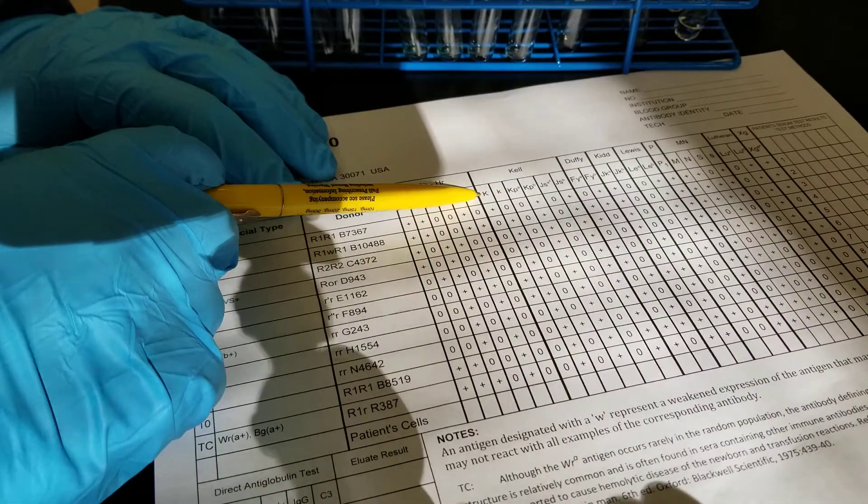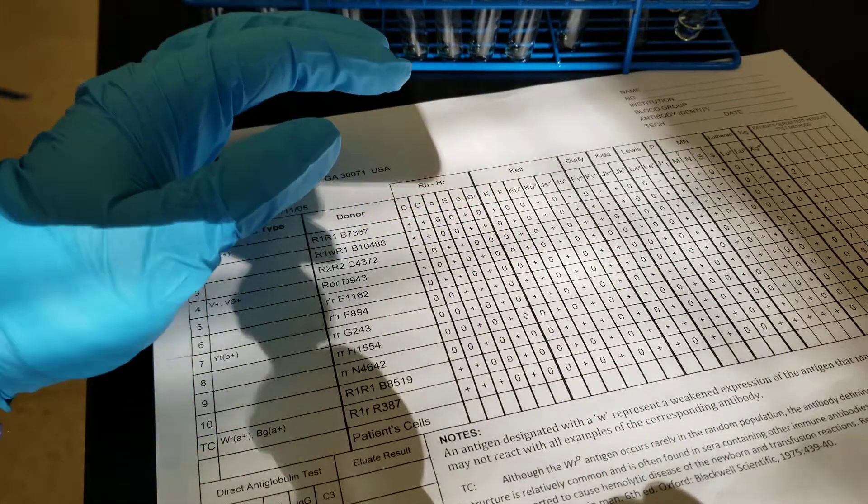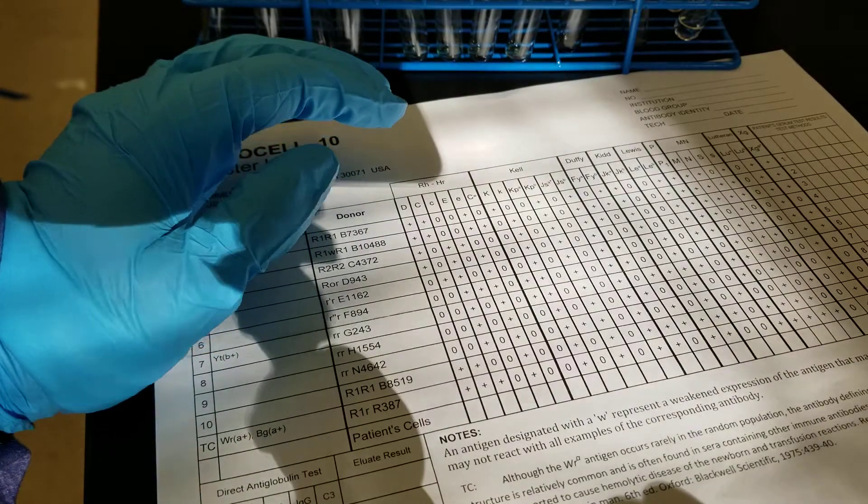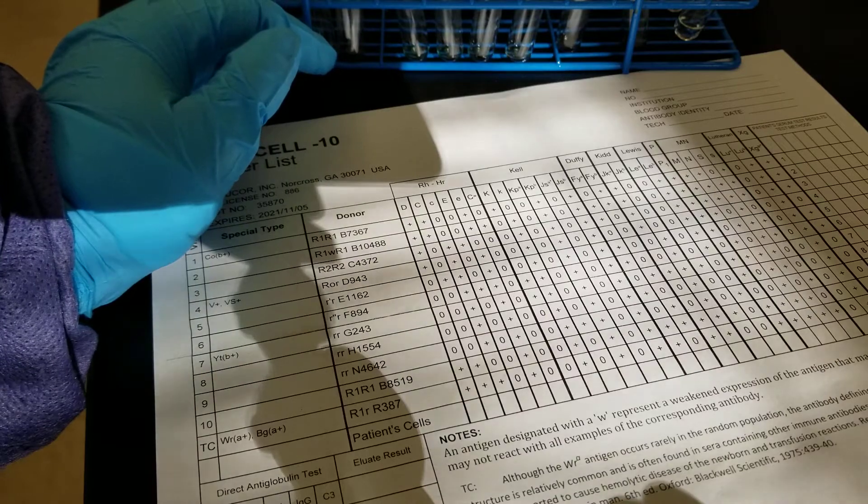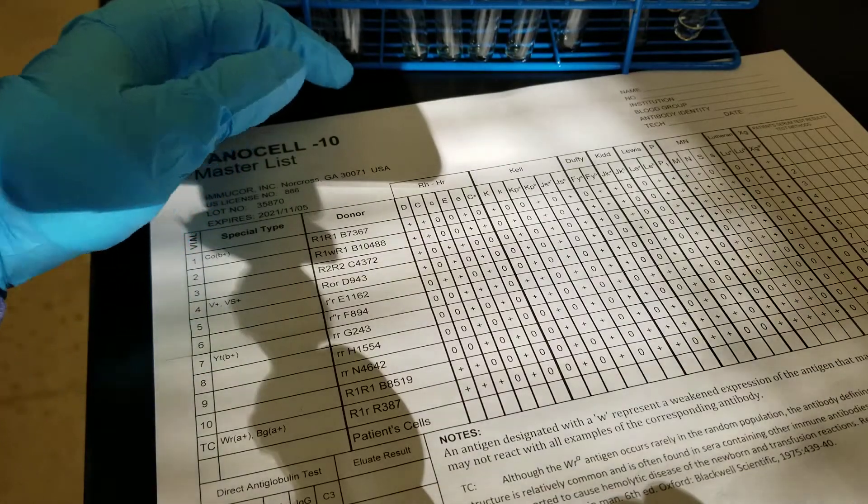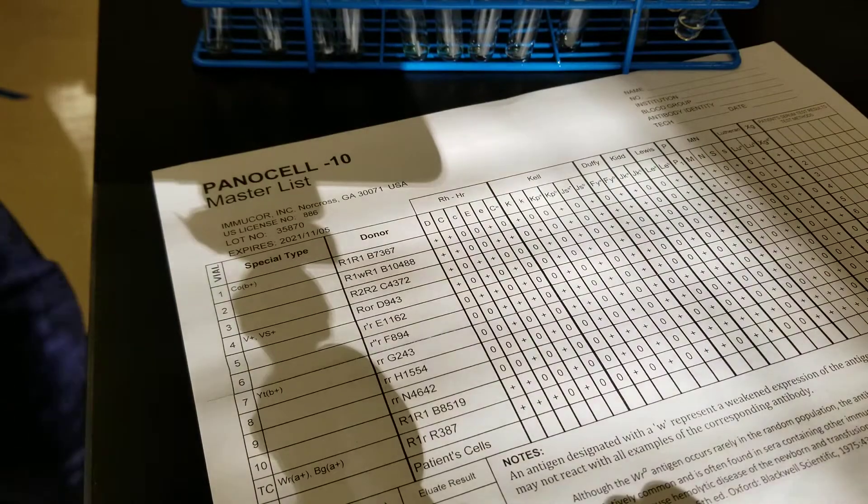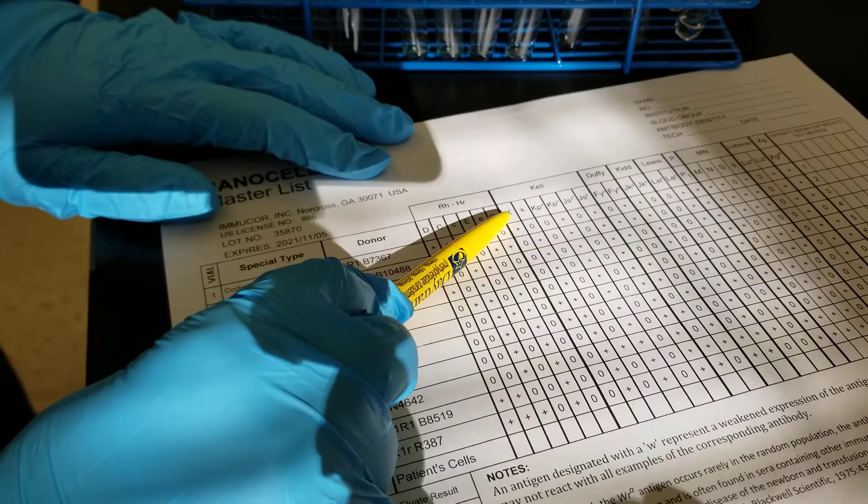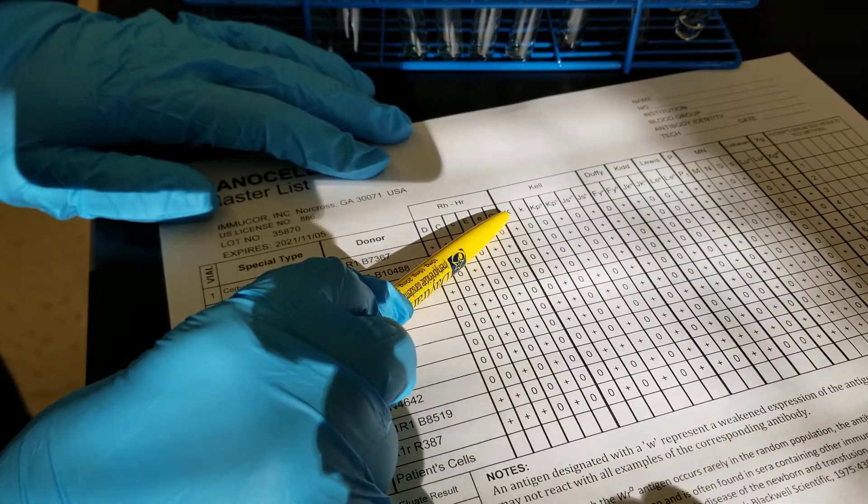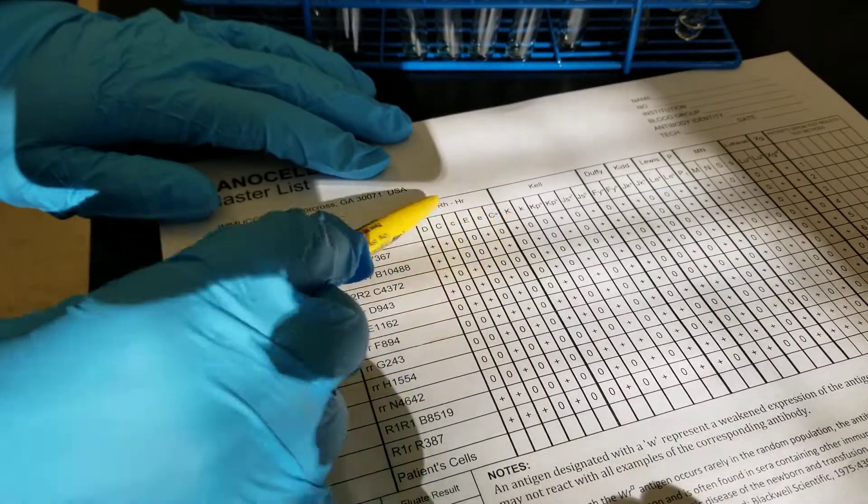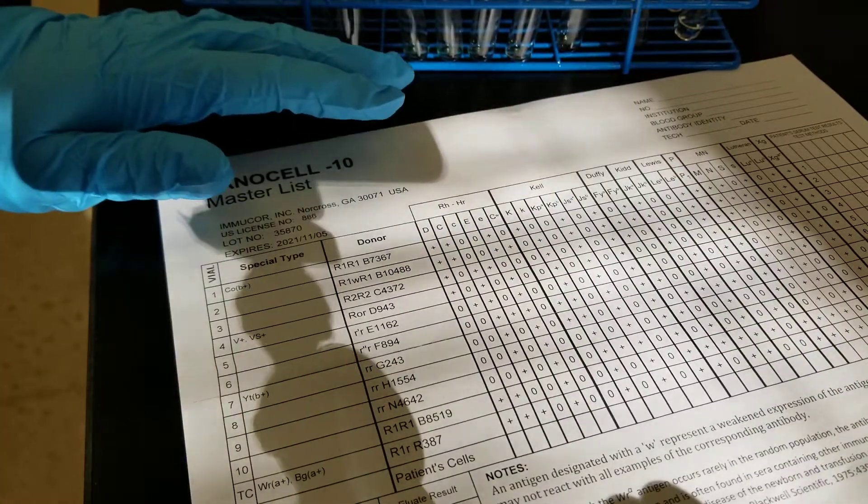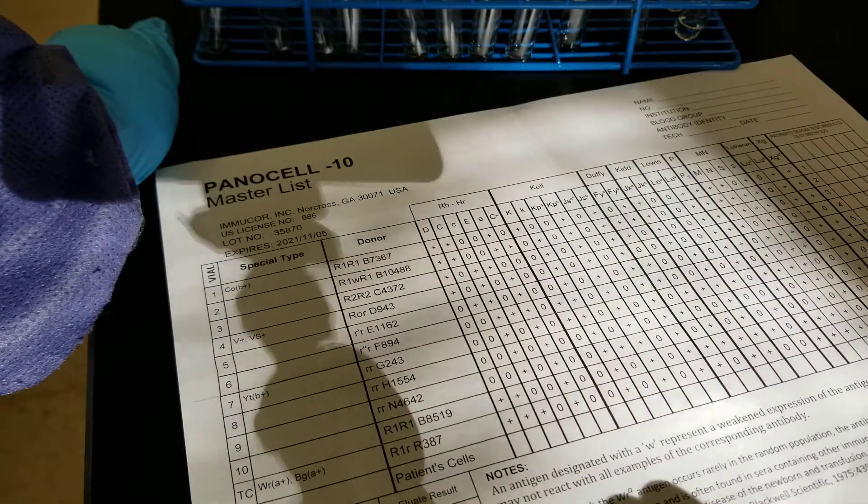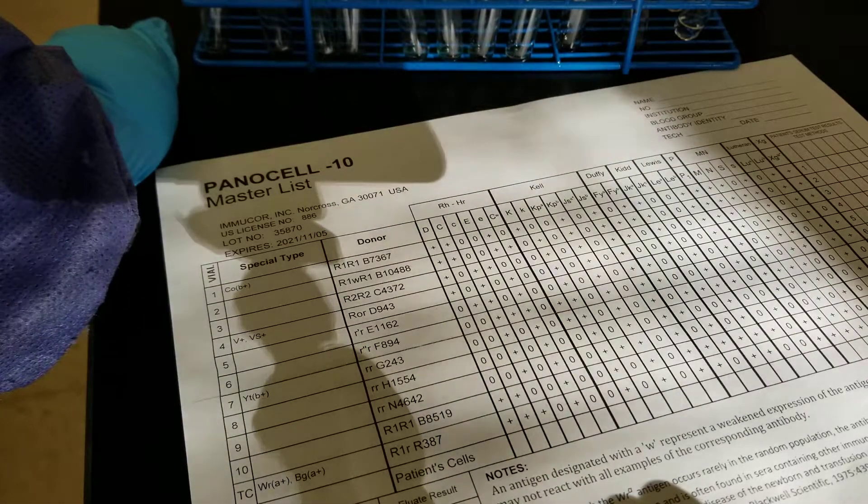As we were saying, anti-Kel, which is big K, its critical titer is going to be lower than that of the other IgGs because they show up pretty early on the RBC as the fetus is growing.